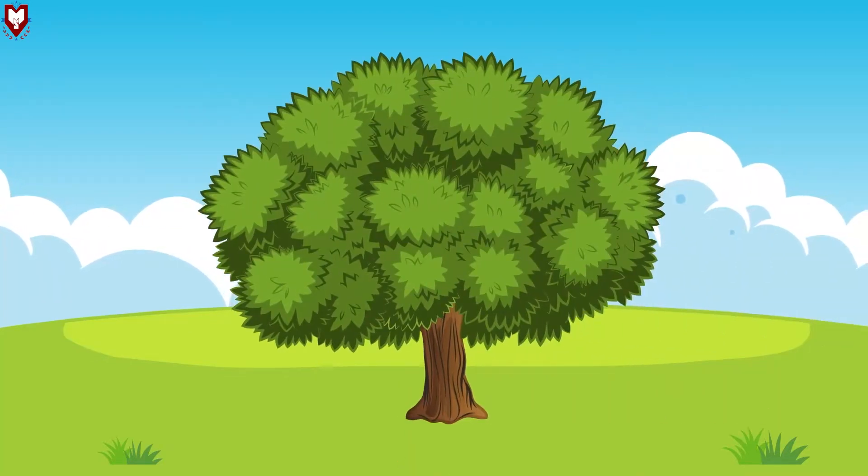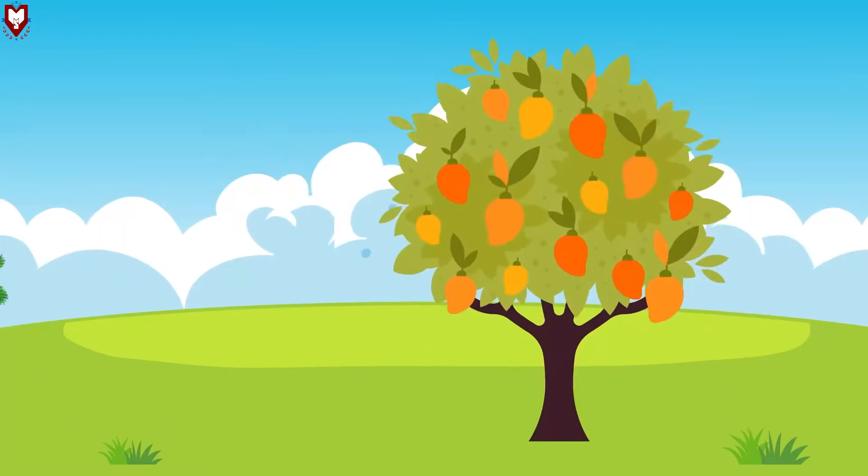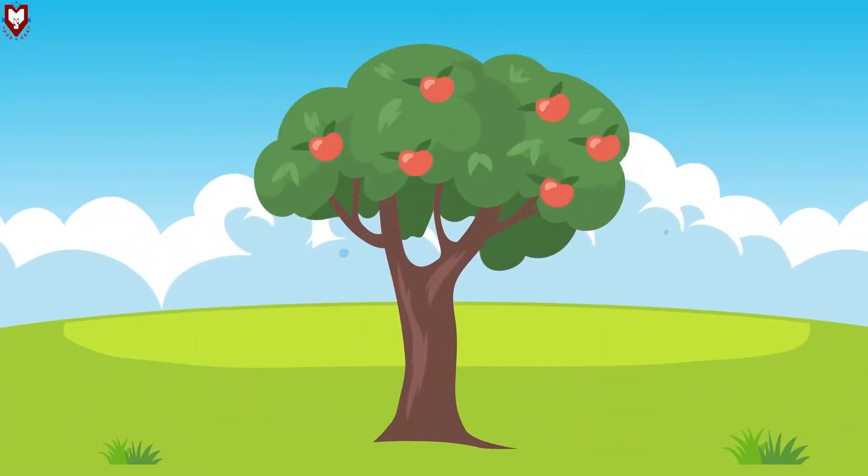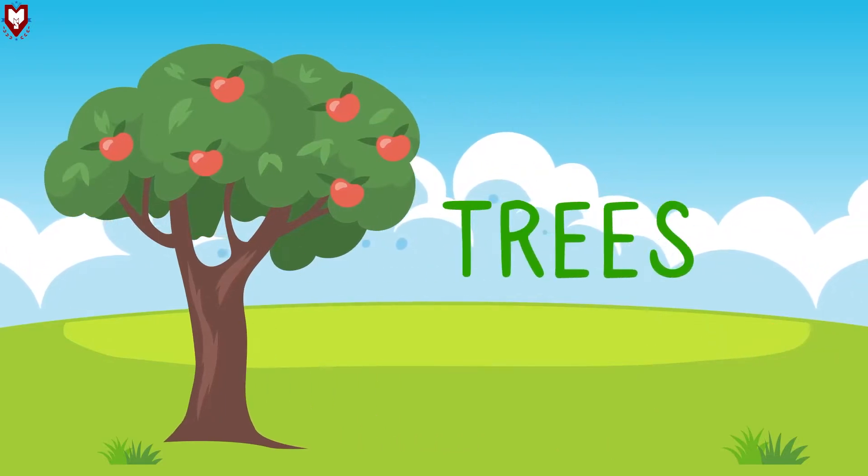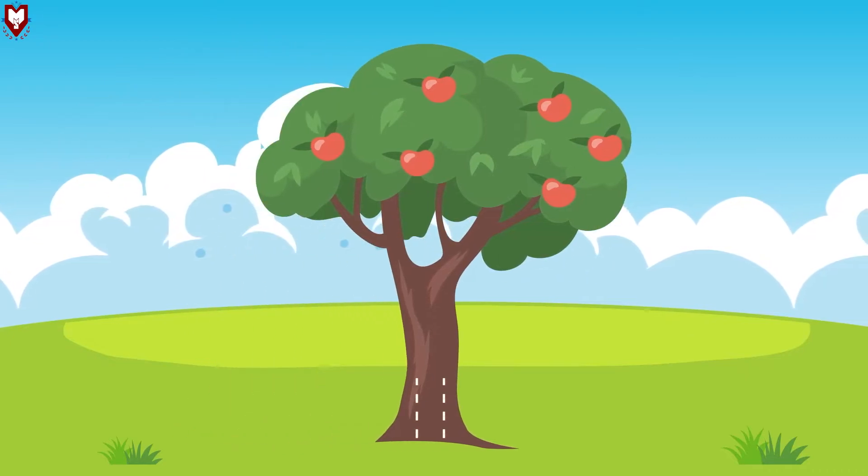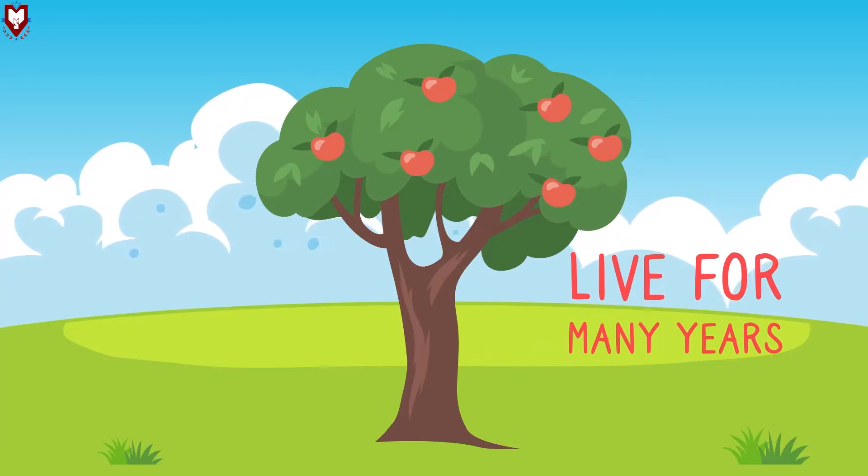The trees like neem tree, coconut tree, mango tree, apple tree, etc. are tall, big and strong. So they are known as trees. They can stand upright and live for many years.